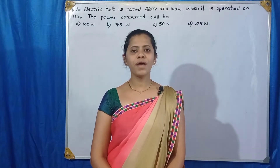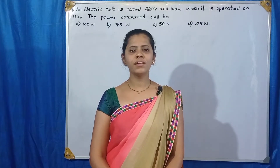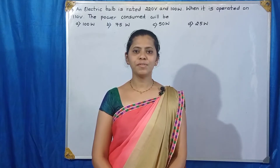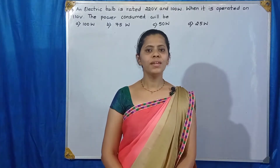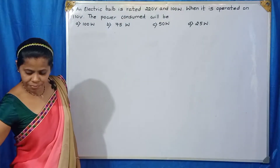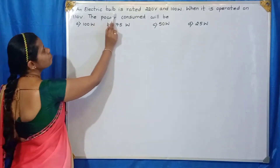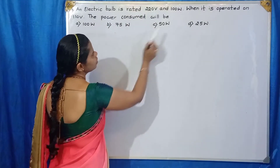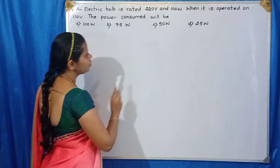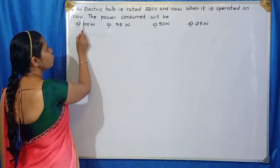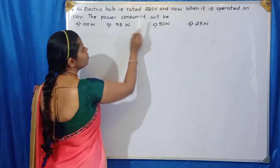In this class, we are going to solve the numerical problem of the lesson Electricity, 10th Standard NCERT Syllabus. Let's read the problem once. An electric bulb is rated 220V at 100W. When it is operated on 110V, the power consumed will be?